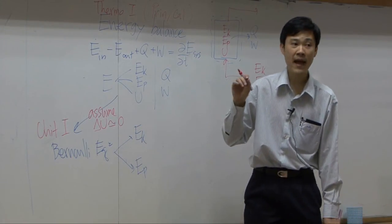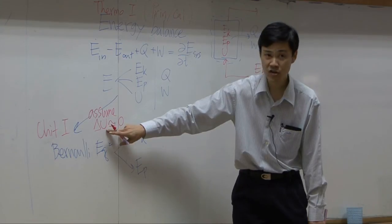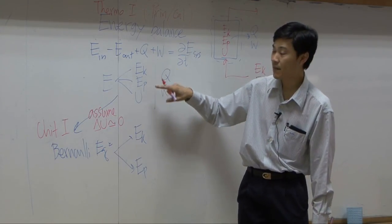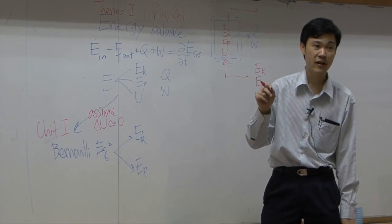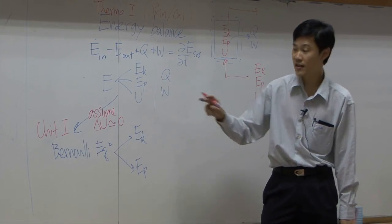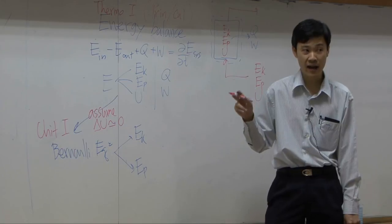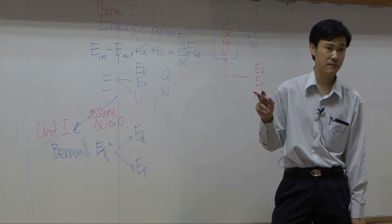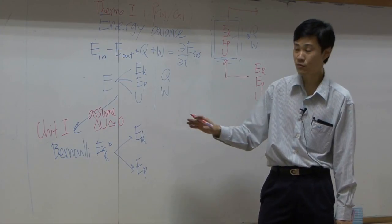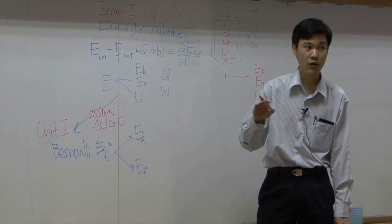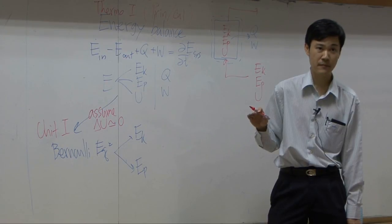If you compare magnitude of internal energy change and kinetic and potential change, if you have phase change or if you have temperature change, delta U is much, much higher than delta Ek and delta Ep. That's why whenever you use Bernoulli equation, you must assume temperature constant and no phase change.